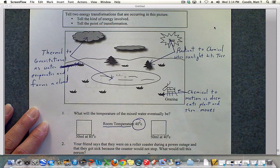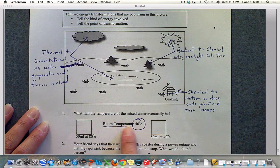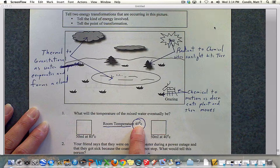Question number one, what will the temperature of the mixed water eventually be? We have two different scenarios here. We have 50 milliliters of 80 degrees Celsius water and we have 50 milliliters of 40 degrees Celsius water. The key to the question here is telling you that room temperature in this case is 40 degrees Celsius.